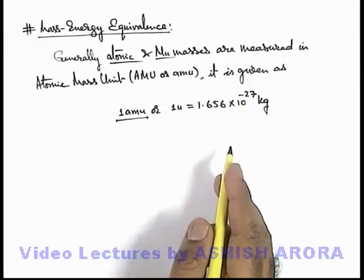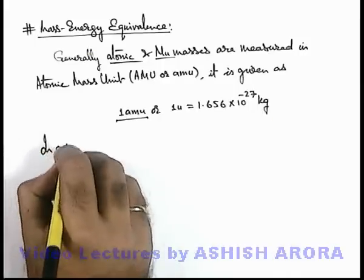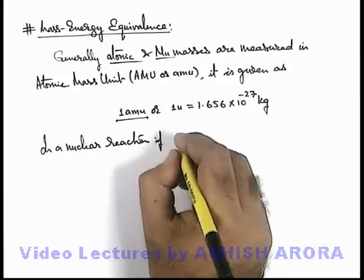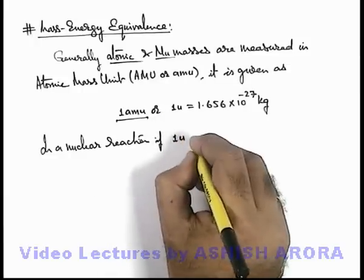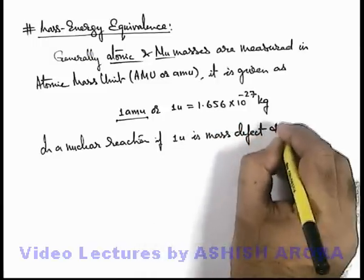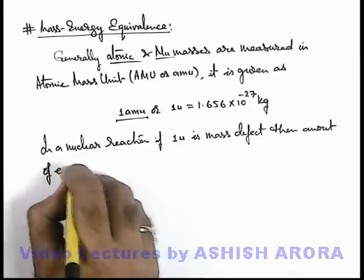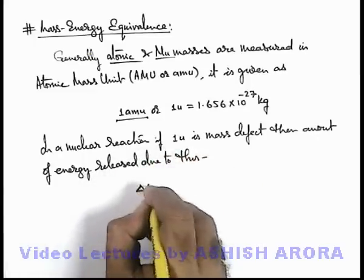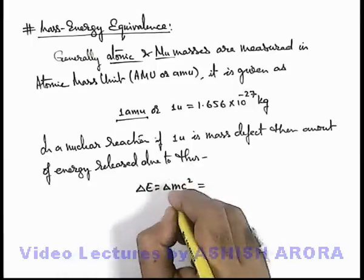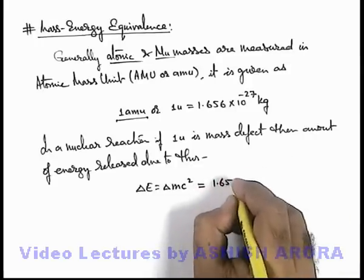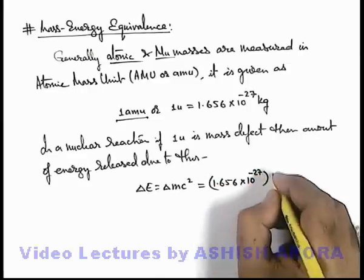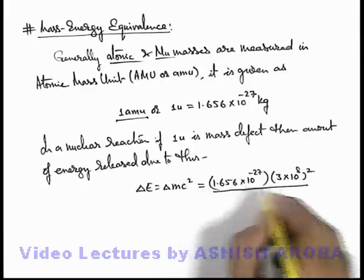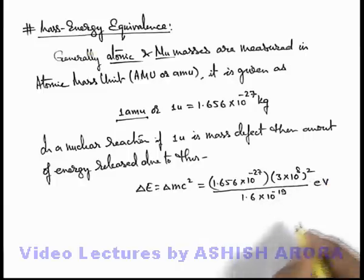In a nuclear reaction, this is a direct conversion factor we are going to use. If 1 AMU is the mass defect, then the amount of energy released due to this can be given as ΔE = Δmc². If we substitute the values, Δm will be 1 AMU = 1.656 × 10⁻²⁷ kg, multiplied by (3 × 10⁸)² — this gives the energy in joules. We can then divide it by 1.6 × 10⁻¹⁹ to get the energy in electron volts.